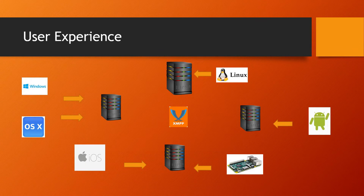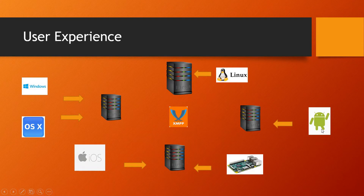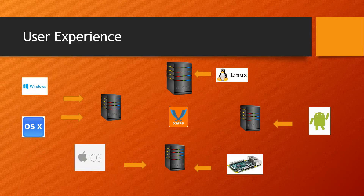Building on the architecture of XMPP, we have a cool network of different devices that can talk to each other, and this is the real power of XMPP. For example, using an XMPP app running on Windows, you can talk to a user running an app on Android and vice versa. You can even have things running on embedded devices today, so this is a really cool technology to have under your belt.